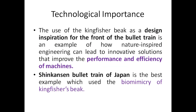Now the technological importance of this particular bird — the use of the kingfisher beak as a design inspiration for the front part of the bullet train is an example of how nature-inspired engineering can lead to innovative solutions that improve performance and efficiency of machines. Bullet trains are known for their speed, and at such speeds they experience huge amounts of air resistance. The structure has to be similar to the kingfisher beak so that it can break through that resistance and increase performance and efficiency.